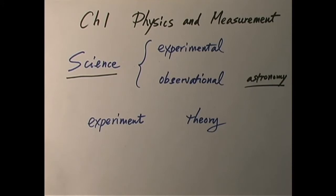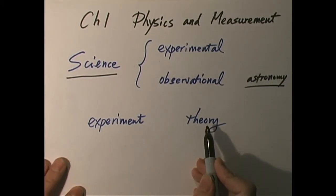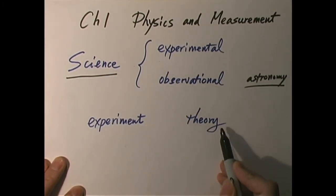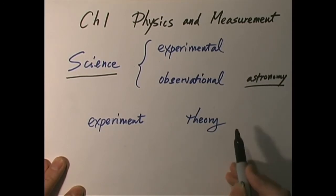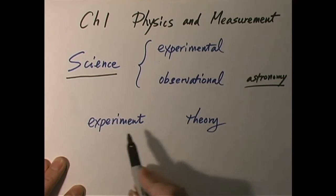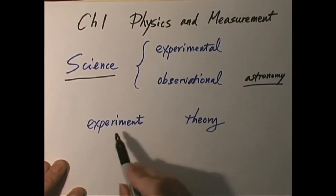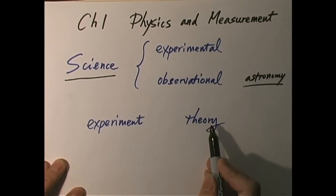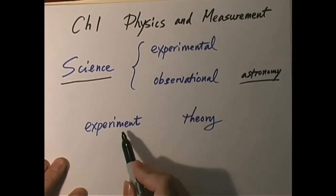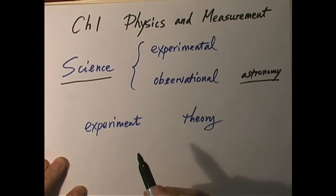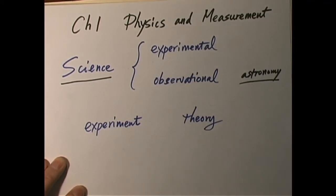Of course, doing experiments is not the only way of doing physics. There is also something called theory. There are physicists who do experiments — these are called experimentalists — and there are physicists who primarily work on the theory side — these are called theorists. What is the relationship between an experimentalist and a theorist? Well, there is interactivity between these two fields. For example, when you do an experiment, you find that the pressure of the gas is linearly proportional to the temperature of the gas. That's from an experiment.